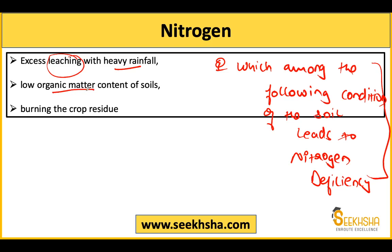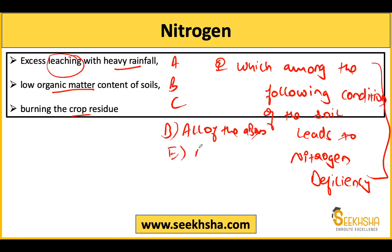If the soil is very low in organic matter, and if you have crop residue burned time and again, those are the key causes of nitrogen deficiency. In an MCQ question, this will give you options A, B, C, and D as 'all of the above', or if there are five options, option E will be 'none of the above'. So this is how a question on nitrogen deficiency can be framed.